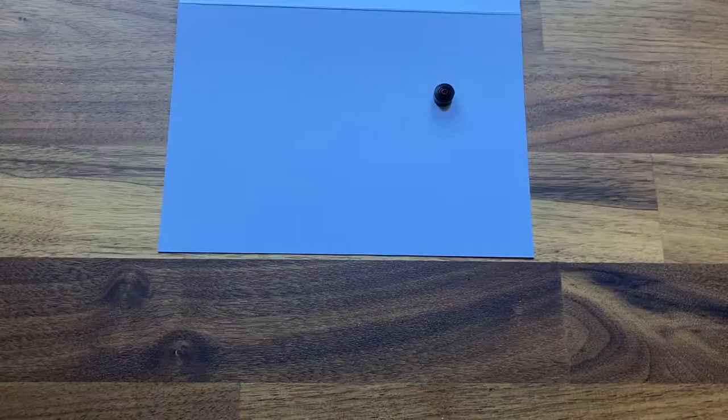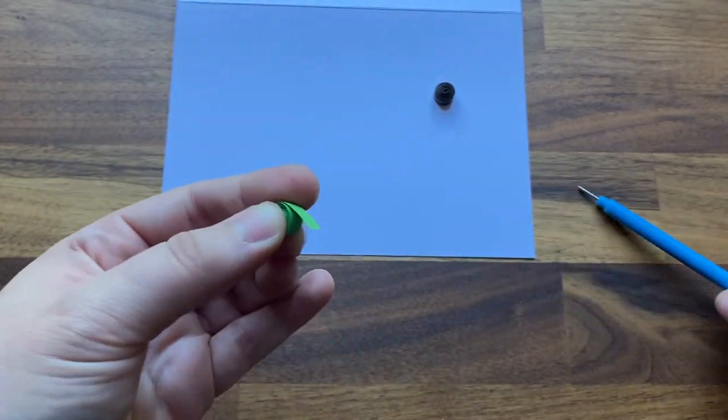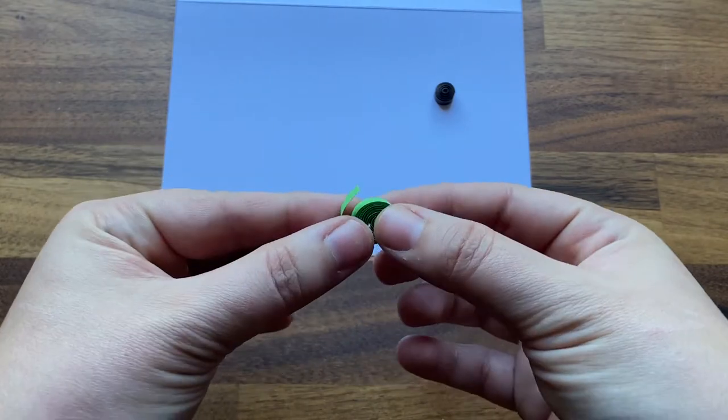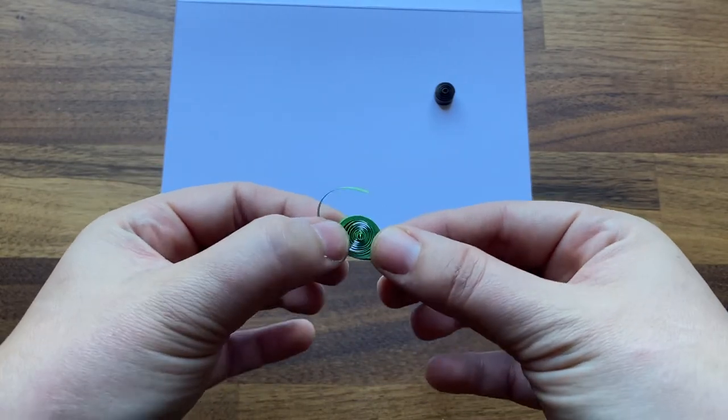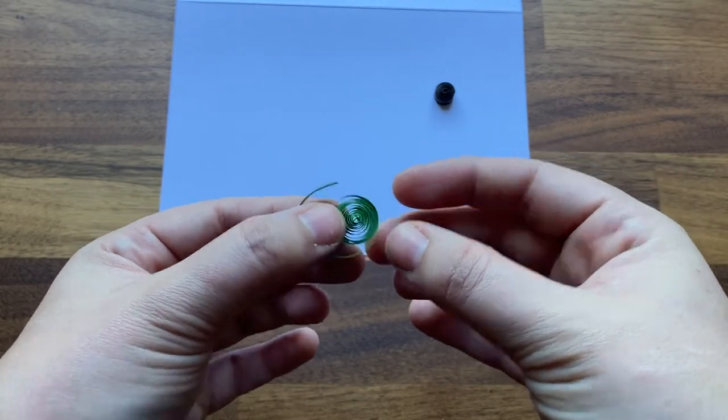For the next shape, repeat the same quilling process, but stop before gluing down the tail end of the quilling paper. Instead, remove the shape from the quilling tool, then loosen carefully in your fingers. You should end up with a round spiral shape.